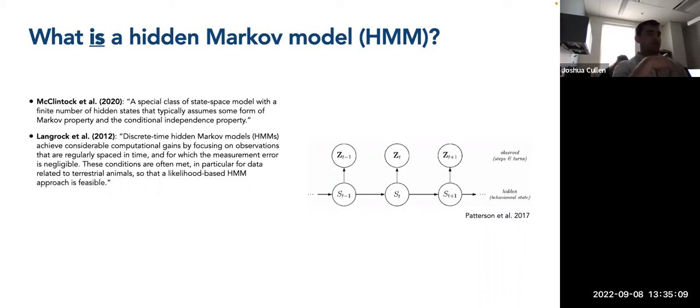Common examples of movement variables used are step lengths and turning angles — describing the distance from one point to the next, and the angle formed by two consecutive steps. A key paper by Langrock and colleagues (2012) defines discrete-time hidden Markov models as achieving considerable computational gains by focusing on observations that are regularly spaced in time.